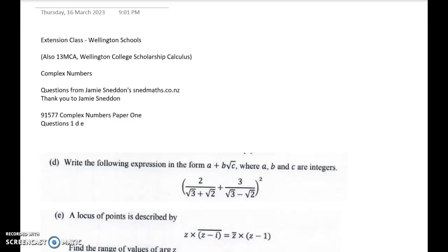Kia ora koutou. This is the second video from Jamie Sneddon's lovely fake complex numbers paper. This is his paper 1 and I'm going to do questions 1D and E.